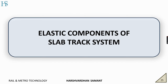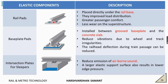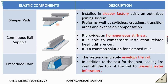Now, elastic components of slab track system. Rail pads are provided between rail base and sleepers; they improve load distribution and provide great passenger comfort, with less wear on superstructures. Base plate is provided between the groove base plate and concrete slab, reducing vibration due to wheels and track irregularities. Intersection plates of sleepers are used to reduce airborne sound. Sleeper pads are installed in factories and perform well in switches, crossings, or transition areas. Continuous rail supports provide homogeneous stiffness and are able to compensate installation-related height differences by a few millimeters. They are a common solution for clamped rails.